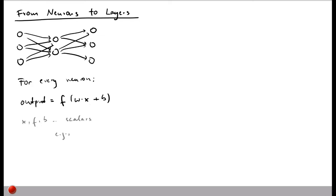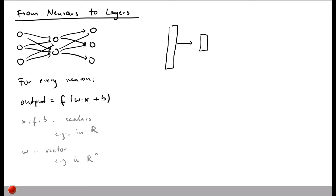The weight w here is a vector — for example a vector of n real numbers if there are n inputs coming into a neuron. Instead of looking at individual neurons, we now abstract them into layers represented by rectangles. The same network then has an input layer, a hidden layer, and an output layer, and we can express the computation in terms of layers.